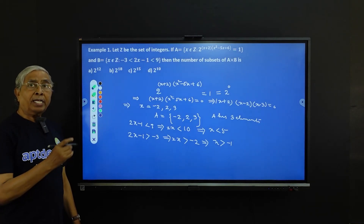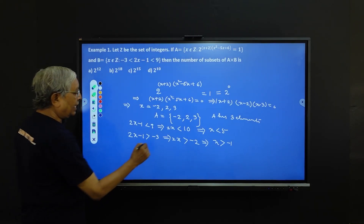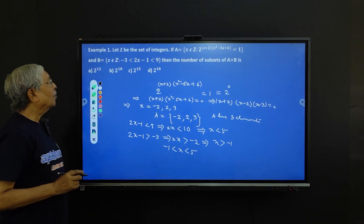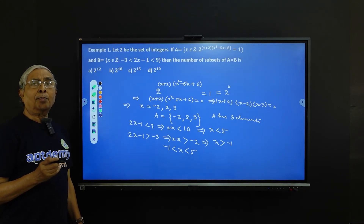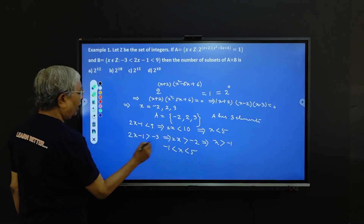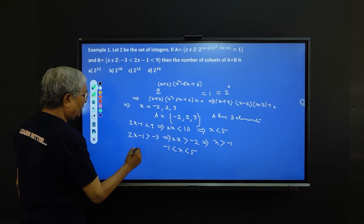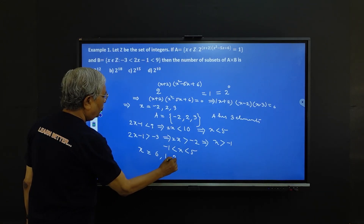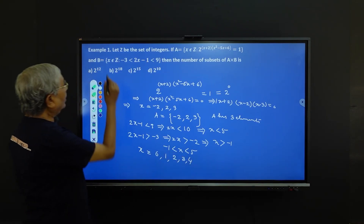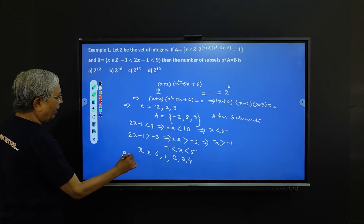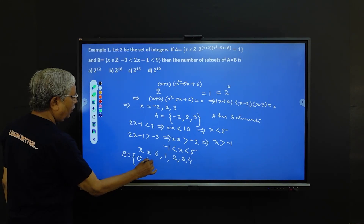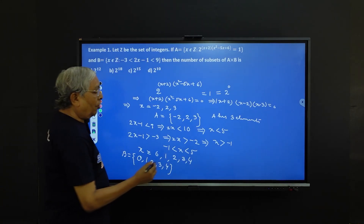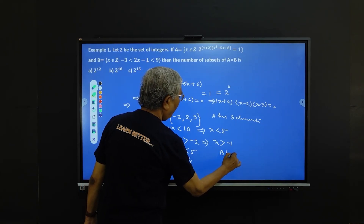So the range of x is -1 < x < 5. Since x must be an integer, the integers between -1 and 5 are x = 0, 1, 2, 3, 4. So set B consists of 5 elements: {0, 1, 2, 3, 4}. B has 5 elements.